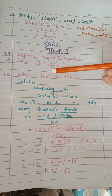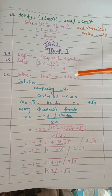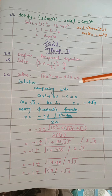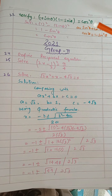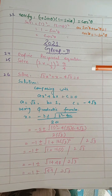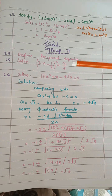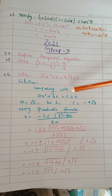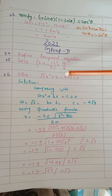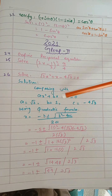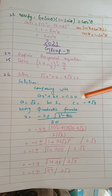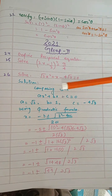You can see: under root 3 x squared plus x minus 4 under root 3 is equal to 0. Because you have to solve this using the quadratic formula, the method is comparing this equation. Let's compare it with A x squared plus B x plus C is equal to 0.